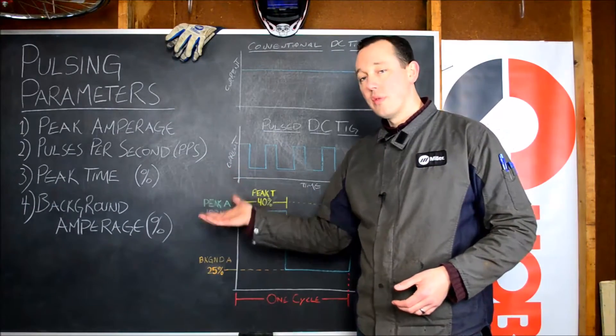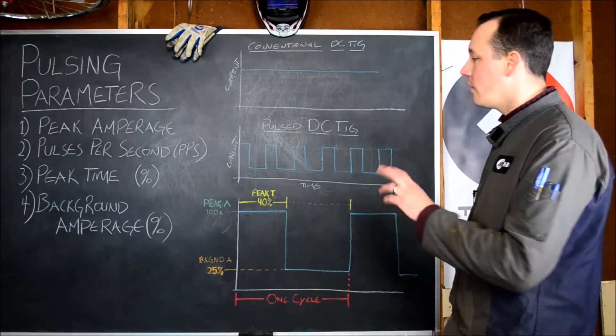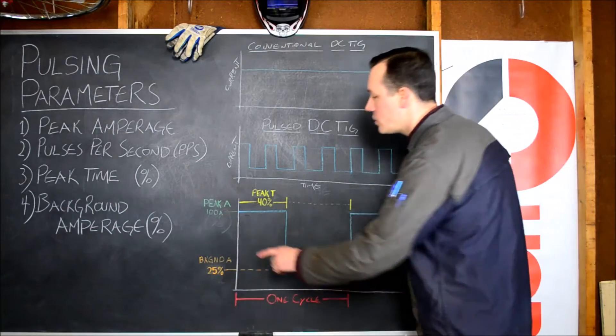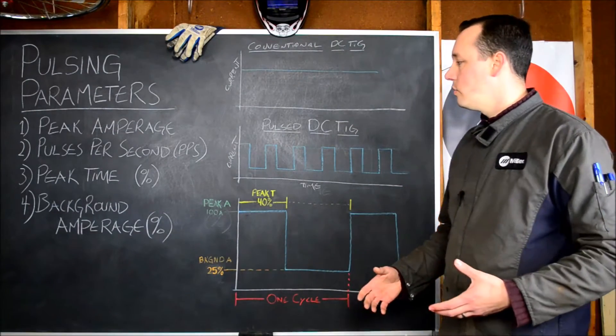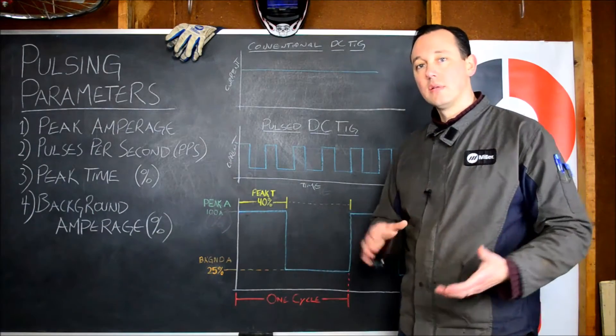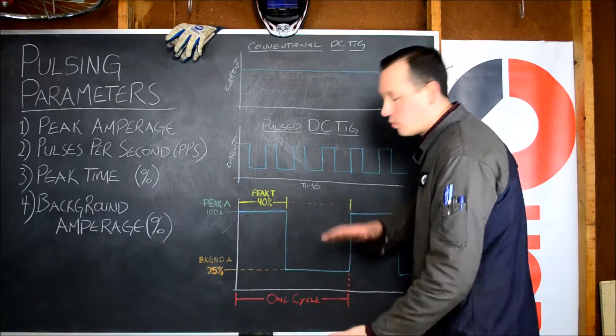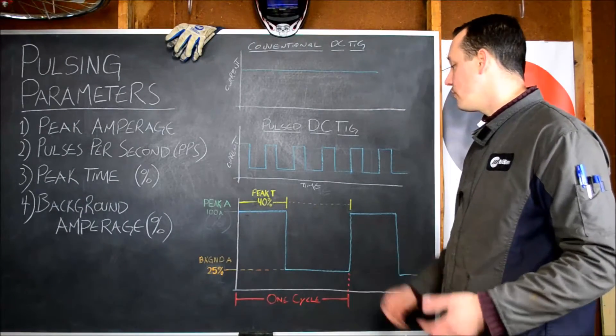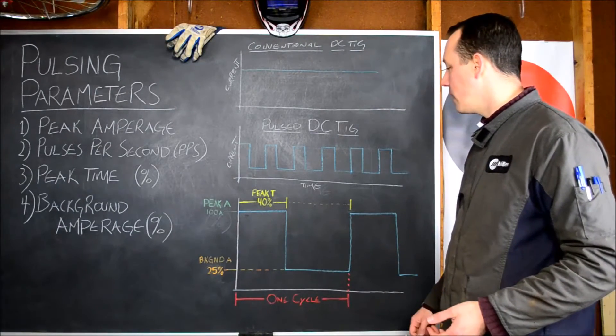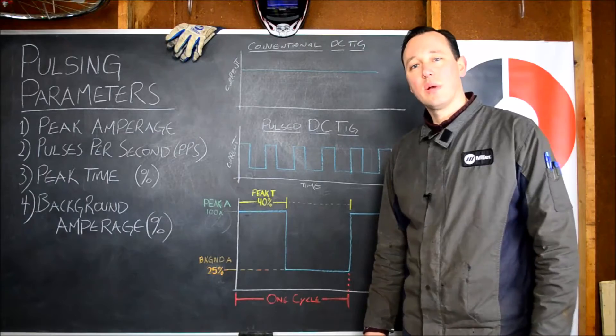And that leads us to our fourth, the background amperage. Now this is programmed as a percentage of your peak amperage. So that allows you to change your peak amperage on the front panel and your graph will scale the whole time. So those are the four main parameters and let's look at how we want to program them.